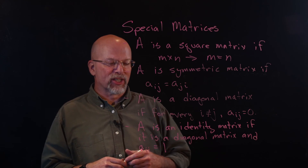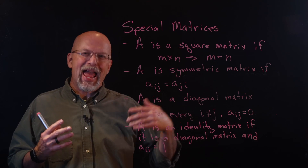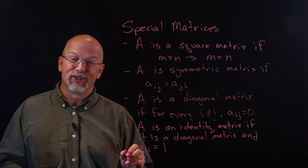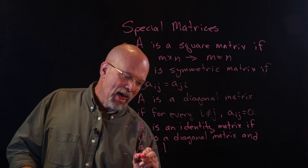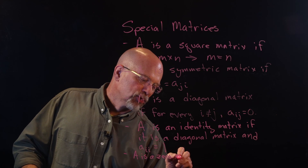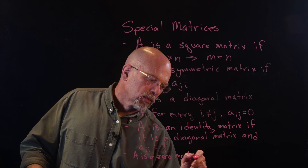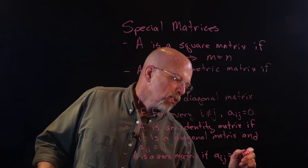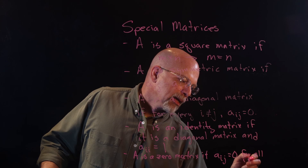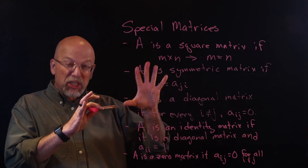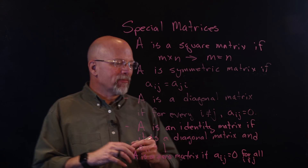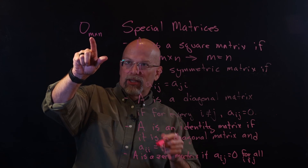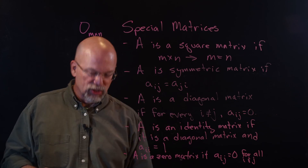If we have this idea of an identity matrix which acts like a 1 in matrix arithmetic, there probably has to be some sort of an additive identity. In math the additive identity is 0 — and it turns out there's a zero matrix too. A is a zero matrix if A sub i,j is equal to 0 for all i and j. It's typically denoted as 0 subscript m by n, which just says you've got an m by n matrix filled with 0's.